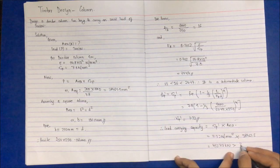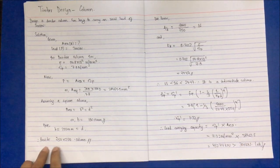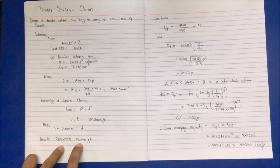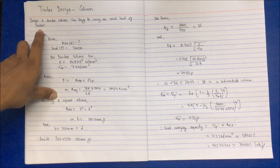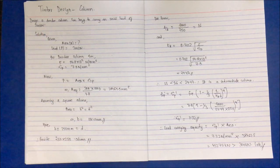This should be greater than the axial load acting on the section, which is 300 kilonewton, so it is safe to provide a 250 into 250 column to carry 300 kilonewton load. This is a type of numerical related to design of timber column.